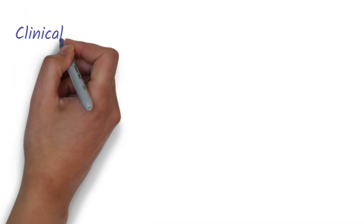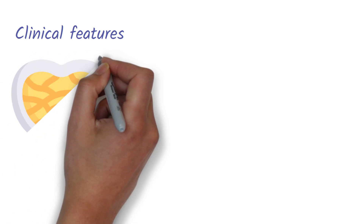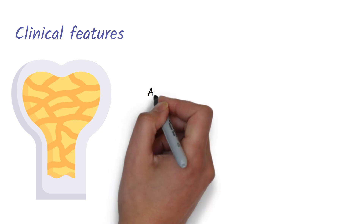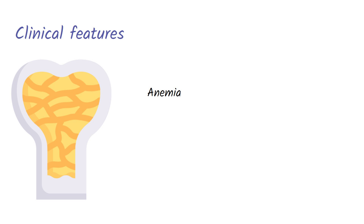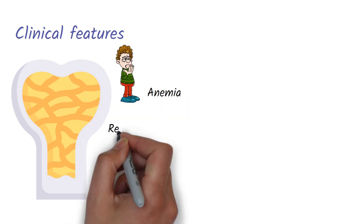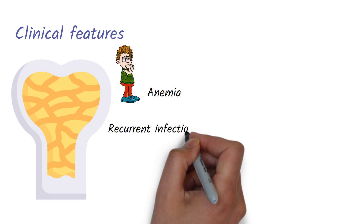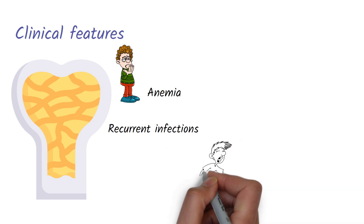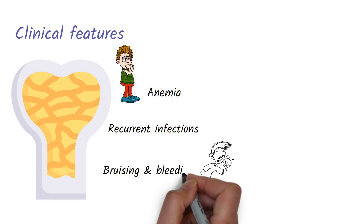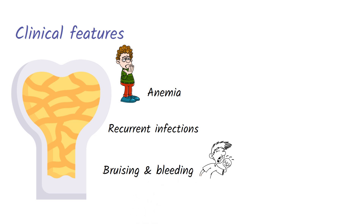The clinical features of myelofibrosis are due to bone marrow failure, so you will have fewer red blood cells, white blood cells, and platelets. Because of the low red blood cell count you will have anemic features like fatigue, and because of the low white blood cell count you will have recurrent infections. Because of the low platelet count you will have bruising and bleeding.